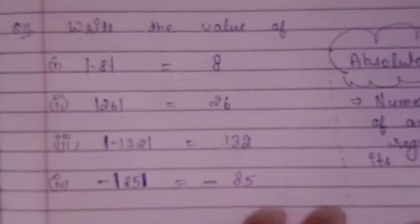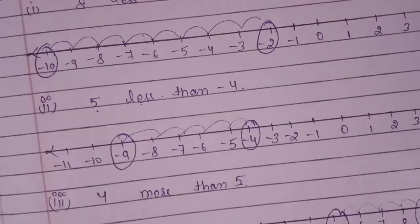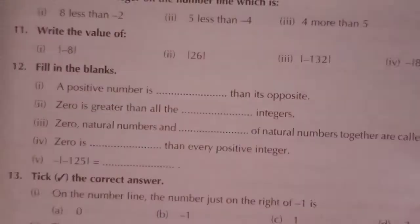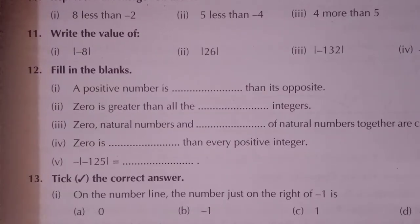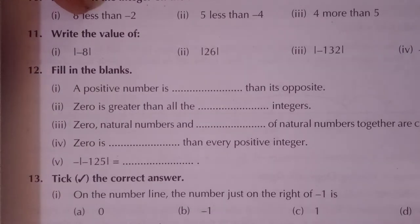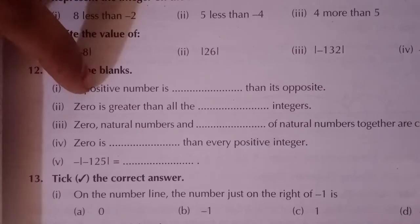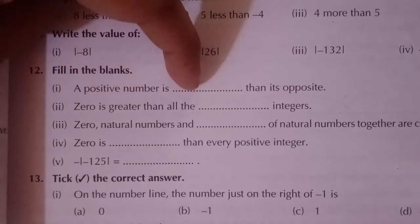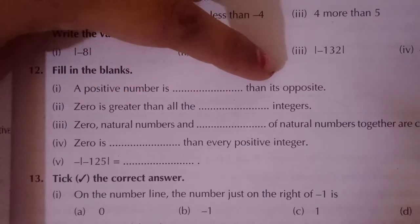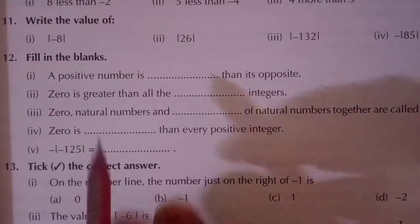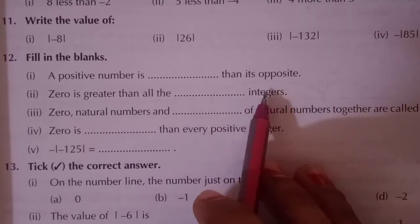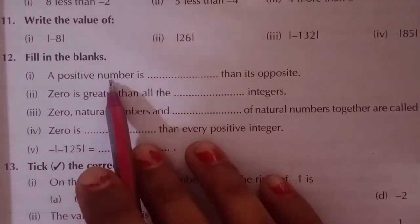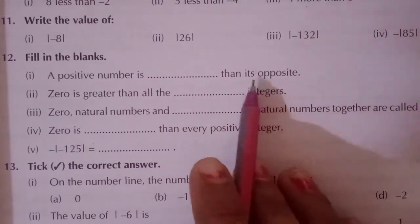I hope you have understood. If you have any doubt, you can post that. Now, question number 12 — fill in the blanks. A positive number is blank then its opposite. If you compare a positive number with its opposite — opposite means negative.